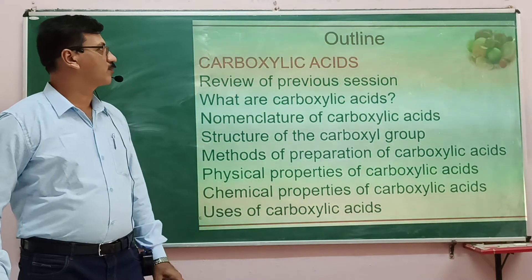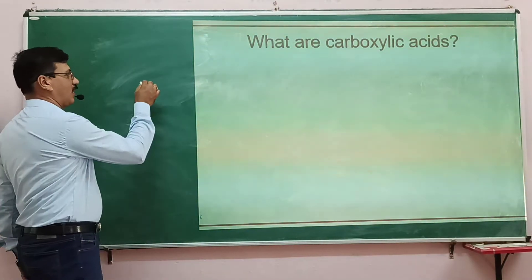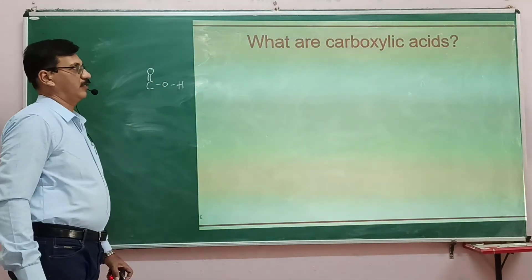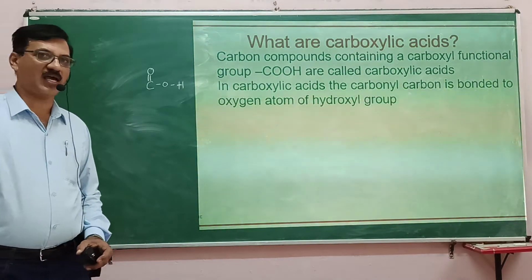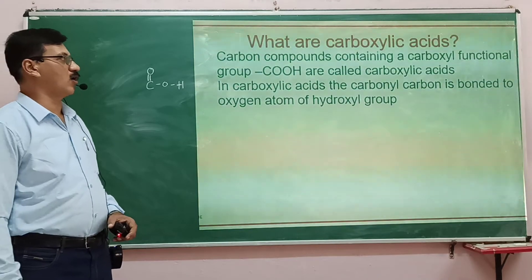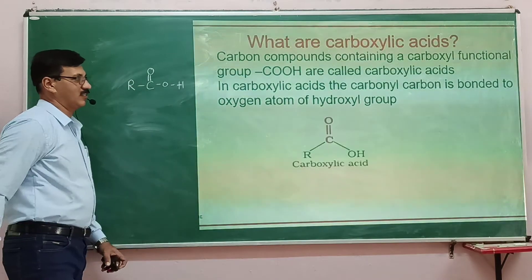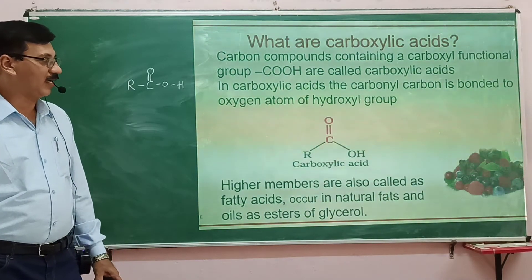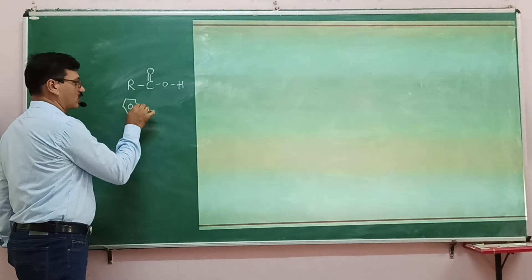What are carboxylic acids? Carboxylic acids are organic compounds that contain the functional group –COOH, called the carboxyl functional group. There must be some alkyl group attached, represented as R, giving the structure R–COOH. The R group can also be an aryl group, such as a benzene ring or a substituted benzene ring.